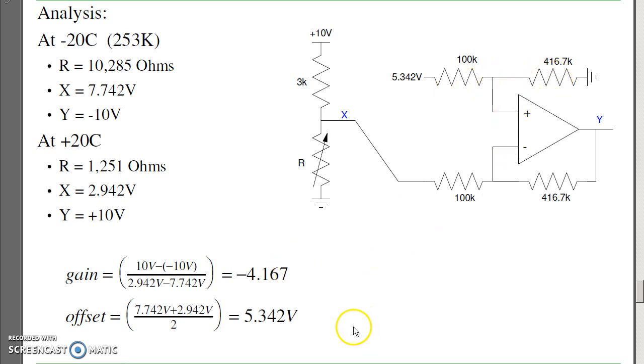And the offset. Again, I want the output to be zero at mid-band. The middle voltage is 5.3 volts. That'll be my offset.